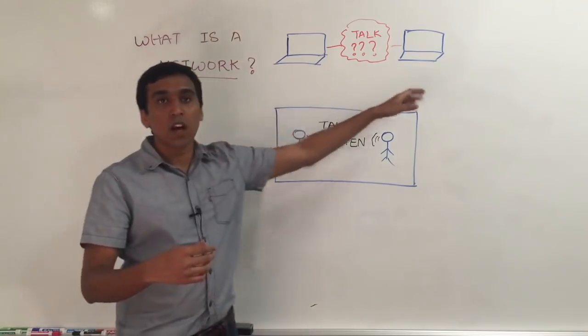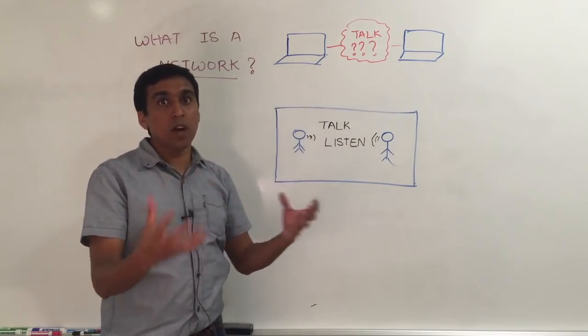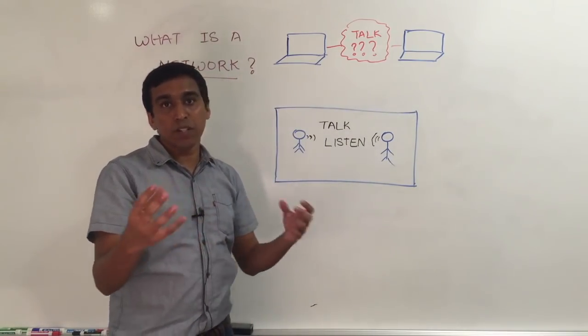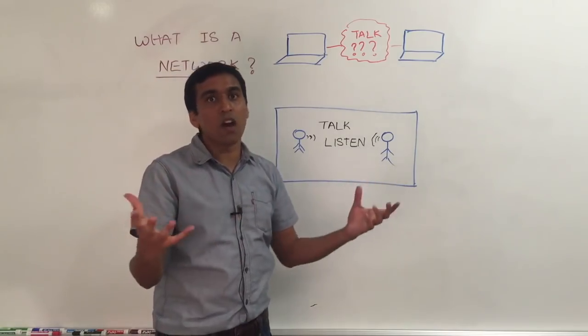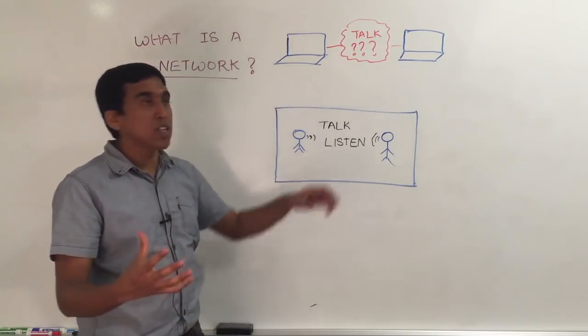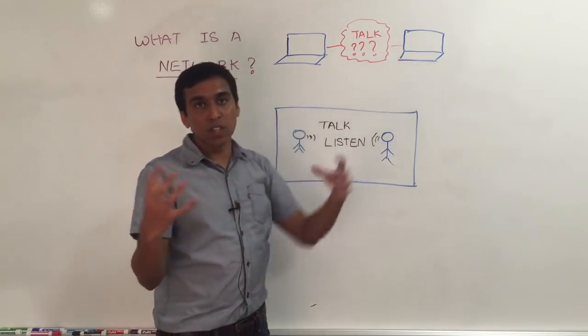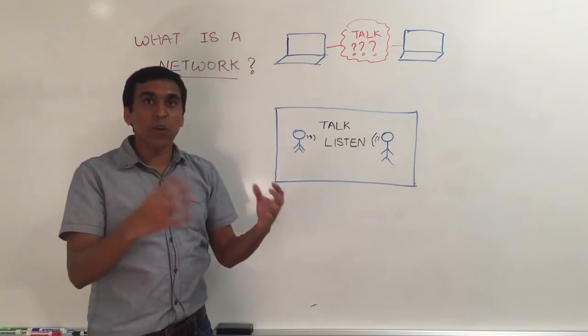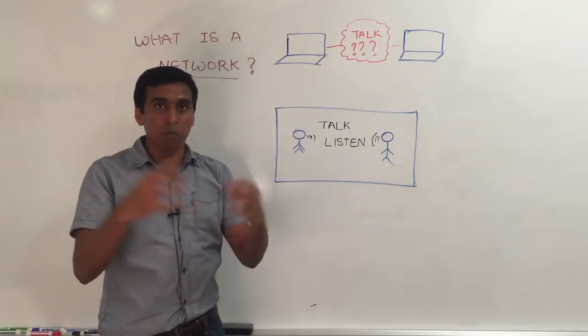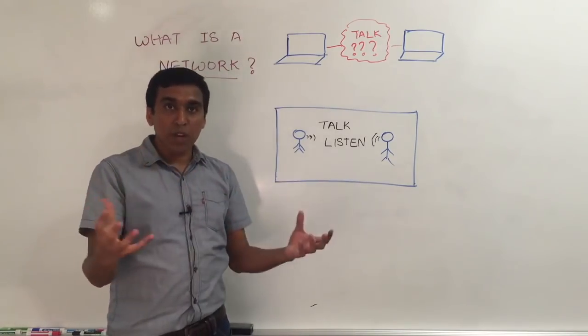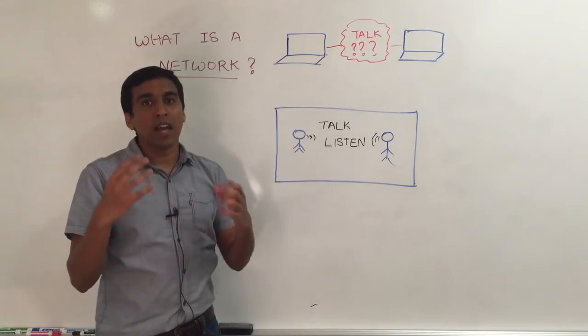Now in case of two computers, how do they talk? They don't have mouths yet or they can't create vibrations in the air. So what we have to do is we need to create some sort of connection between these two computers. A connection between two or more computers or more devices to communicate between them is called a network.